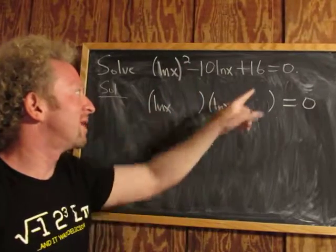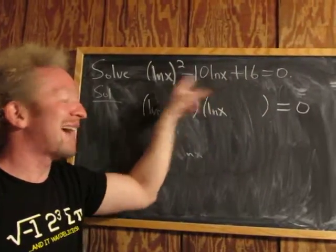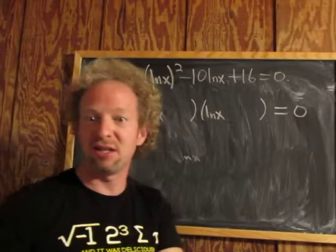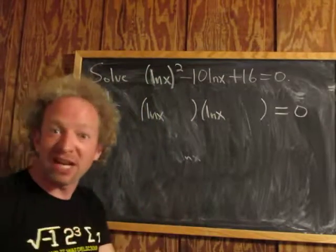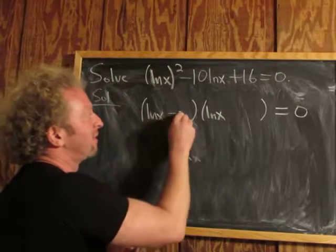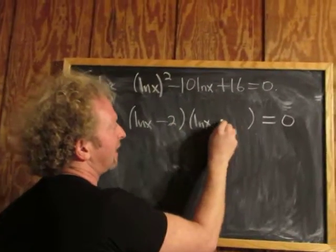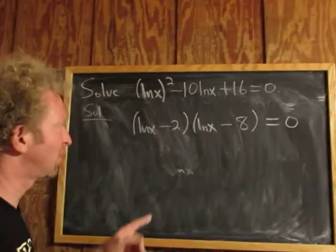Now we need two numbers that multiply to 16 and add to -10. Since 2 times 8 is 16, and they have to add to -10, they must both be negative: -2 and -8.